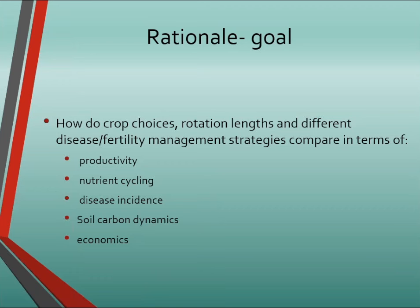Given those considerations, we wanted to ask how crop choices, rotation length, and various disease and fertility management strategies compare in terms of system productivity, nutrient cycling, nitrogen losses through leaching or denitrification, disease incidence, soil carbon dynamics, and comparative economics. The economics are still being worked on as we've just finished the fourth year of the four-year cycle.